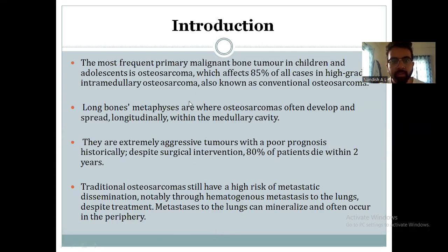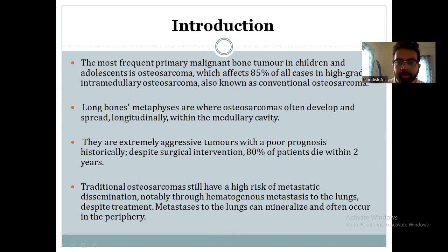Coming to the introduction. Osteosarcoma is the most frequent primary malignant bone tumor in children and adolescents, affecting almost 85% of all cases as high-grade intramedullary osteosarcoma, also known as conventional osteosarcoma. Long-bone metaphyses are the most common site, and osteosarcomas often develop and spread longitudinally within the medullary cavity. These are extremely aggressive tumors with a poor prognosis historically.